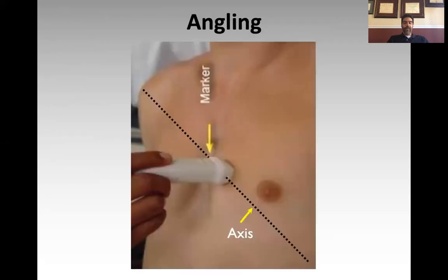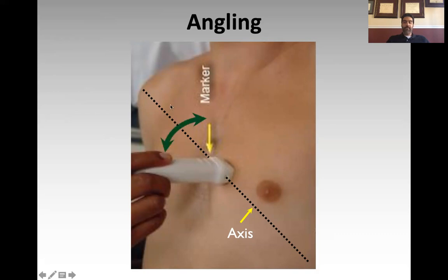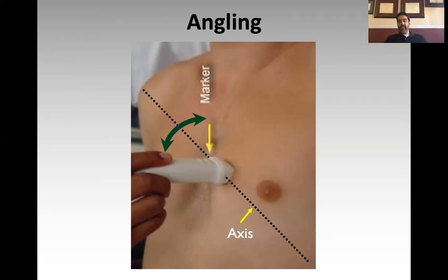First, angling. Angling is basically changing the angle of the probe in reference to the patient — specifically, changing the angle perpendicular to the axis of scanning. For example, back to the parasternal long axis view, the axis of your image is like this. Angling means changing the angle of the probe perpendicular to that axis. You may have heard the term 'fanning' — that is the same thing as angling.